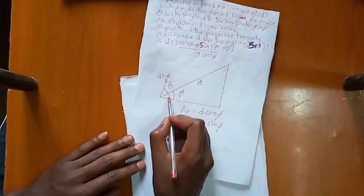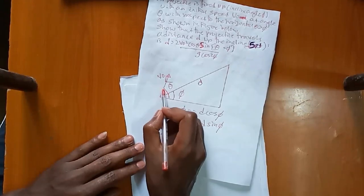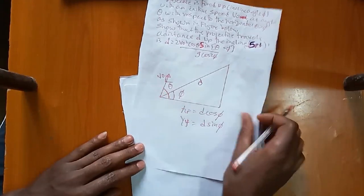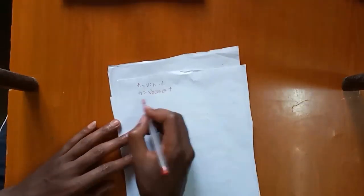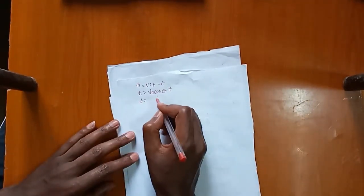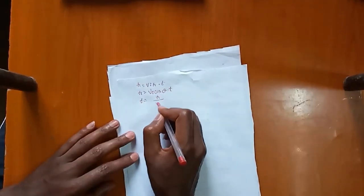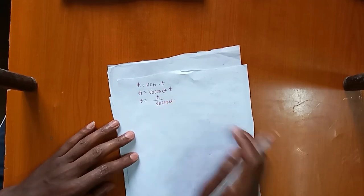So we can write time t is equal to x over v-naught cosθ.